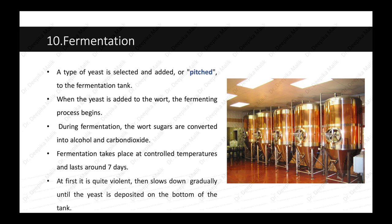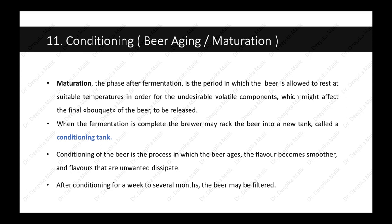After fermentation, the beer is conditioned, aged, or matured. Maturation is the period in which the beer is allowed to rest at suitable temperatures so that undesirable volatile components that might affect the final product are released. When fermentation is complete, the brewer may transfer the beer into a new tank called a conditioning tank. Conditioning is the process in which the beer ages, flavors become smoother, and unwanted flavors dissipate. After conditioning for a week to several months, the beer may be filtered.